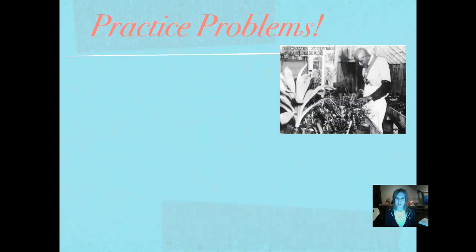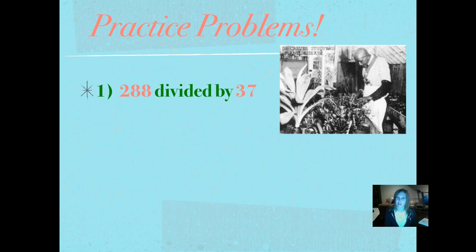Here's our first practice problem: 288 divided by 37. Remember, we're not doing a real division problem. We're finding out about how many times 37 goes into 288. So work that out using mental math strategies and the battle of the zeros strategies, and then you can push play when you're ready.